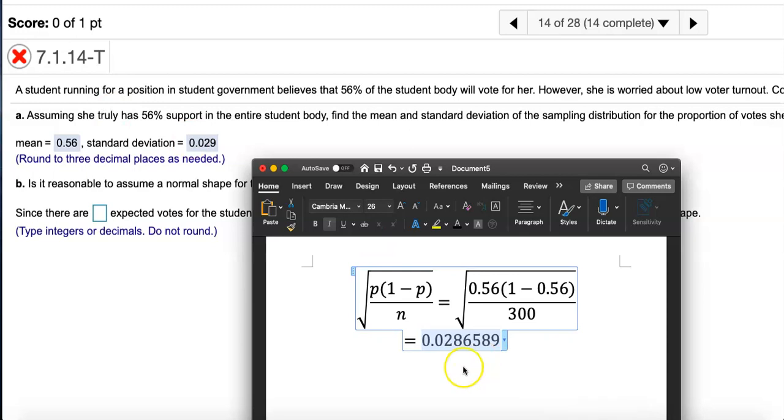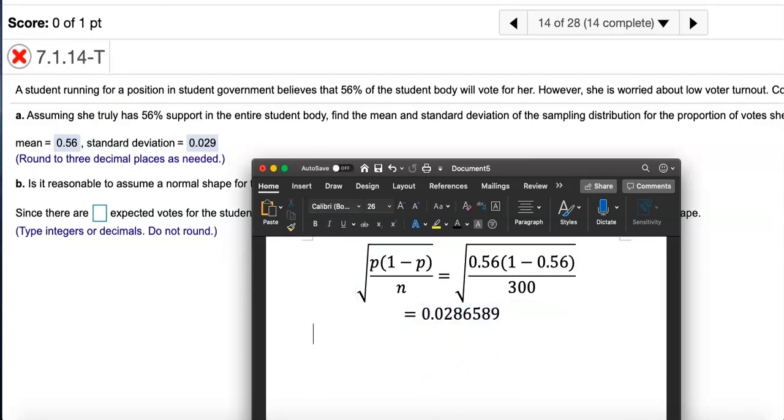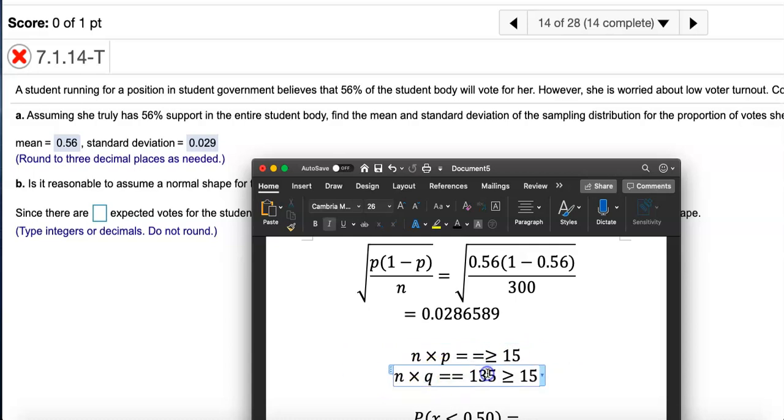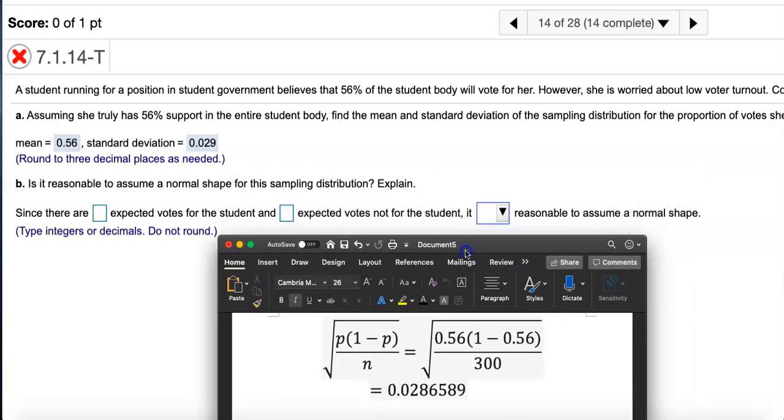Remember, in order for you to assume normal, you need to meet two conditions, and those conditions were that the number of successes has to be greater than or equal to 15, and then the number of failures has to be greater than or equal to 15.